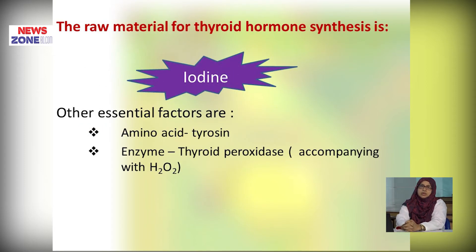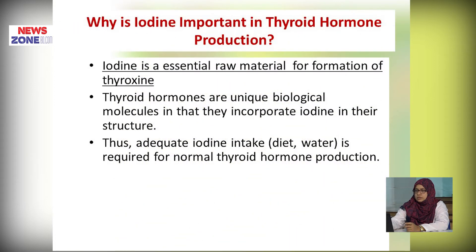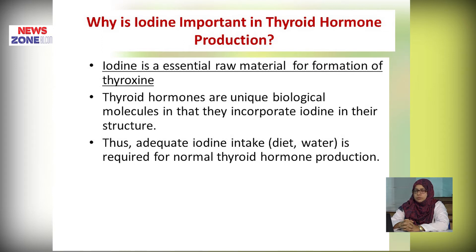T3 has much more biological activity than T4, about 4 times more. In addition, 25 micrograms per day of T3 is produced peripherally by monodeiodination of T4. The raw material for synthesis of thyroid hormone is iodine, along with other essential factors: amino acid tyrosine and the enzyme peroxidase accompanied with hydrogen peroxide. Iodine is essential because thyroid hormones are unique biological molecules that incorporate iodine in their structure.